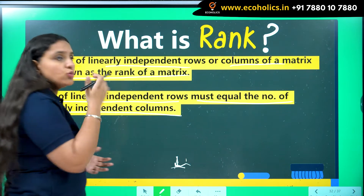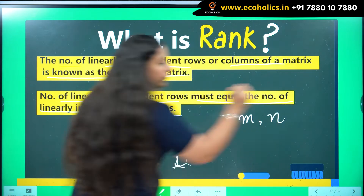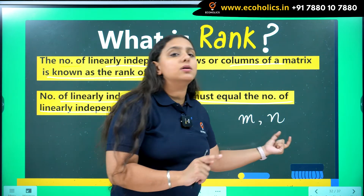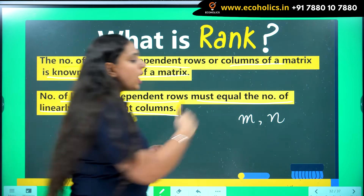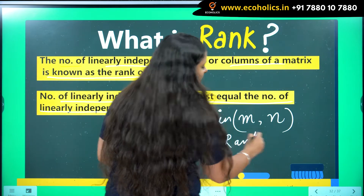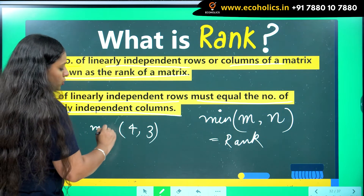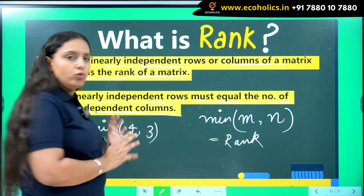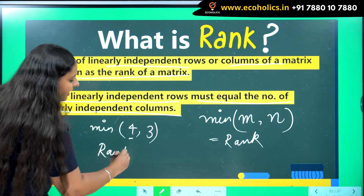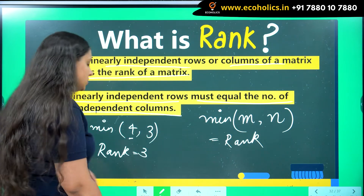In those cases, let m be the number of linearly independent rows and n be the number of linearly independent columns. Whichever is minimum, the rank will be equal to that. For example, if four rows are independent but only three columns are independent, the rank cannot be four — it will be equal to three, the minimum.